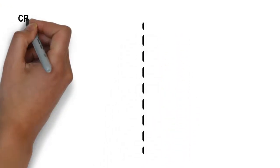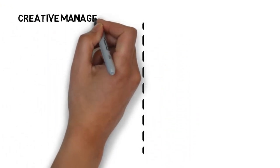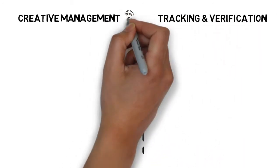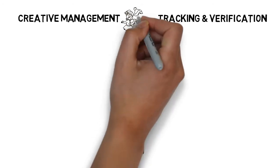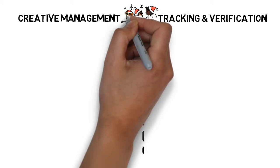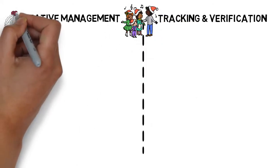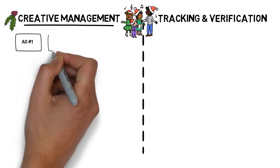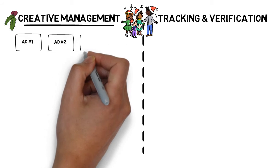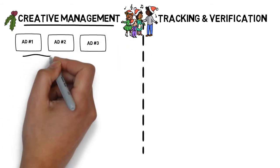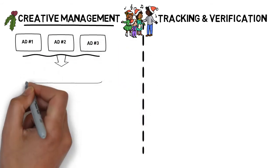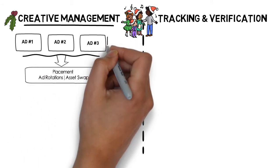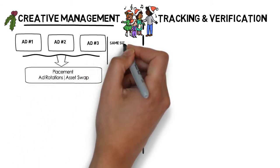According to this definition, there are two very important features of an ad server: creative management and tracking and verification. You can definitely use the platform for something else, but these are the two essentials. Creative management includes the ability to traffic multiple creatives under the same tag.